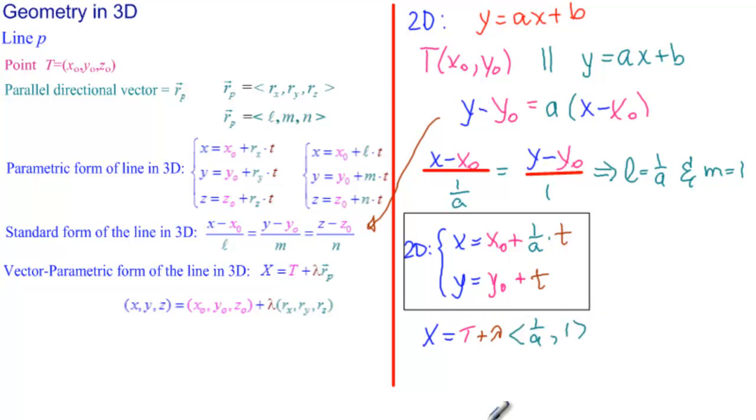or xy equals x0, y0 plus lambda times 1 over a, 1.